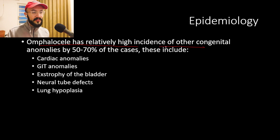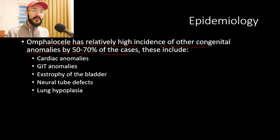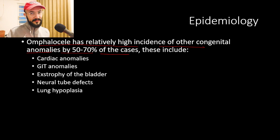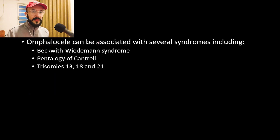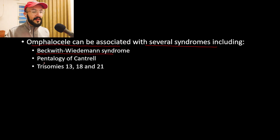Omphalocele has a relatively high incidence of other congenital anomalies — 50 to 70 percent of cases — compared to gastroschisis, where only 10 percent of cases have associated congenital anomalies. Associated anomalies include cardiac anomalies, gastrointestinal anomalies, exstrophy of the bladder, neural tube defects, lung hypoplasia, and much more.